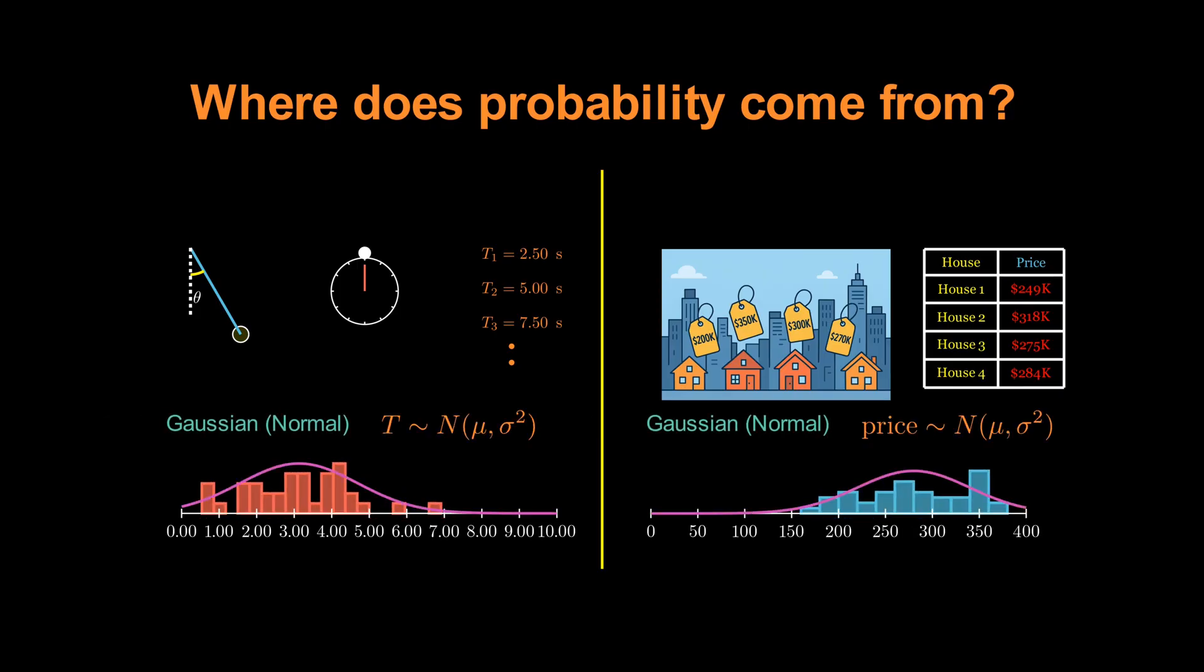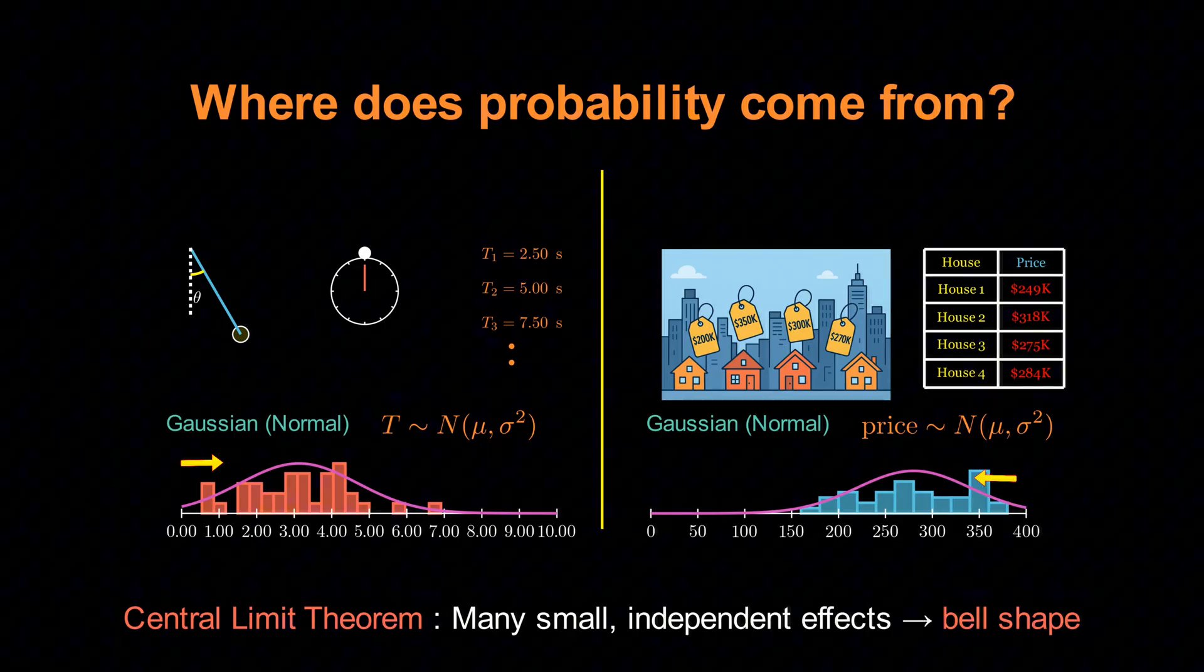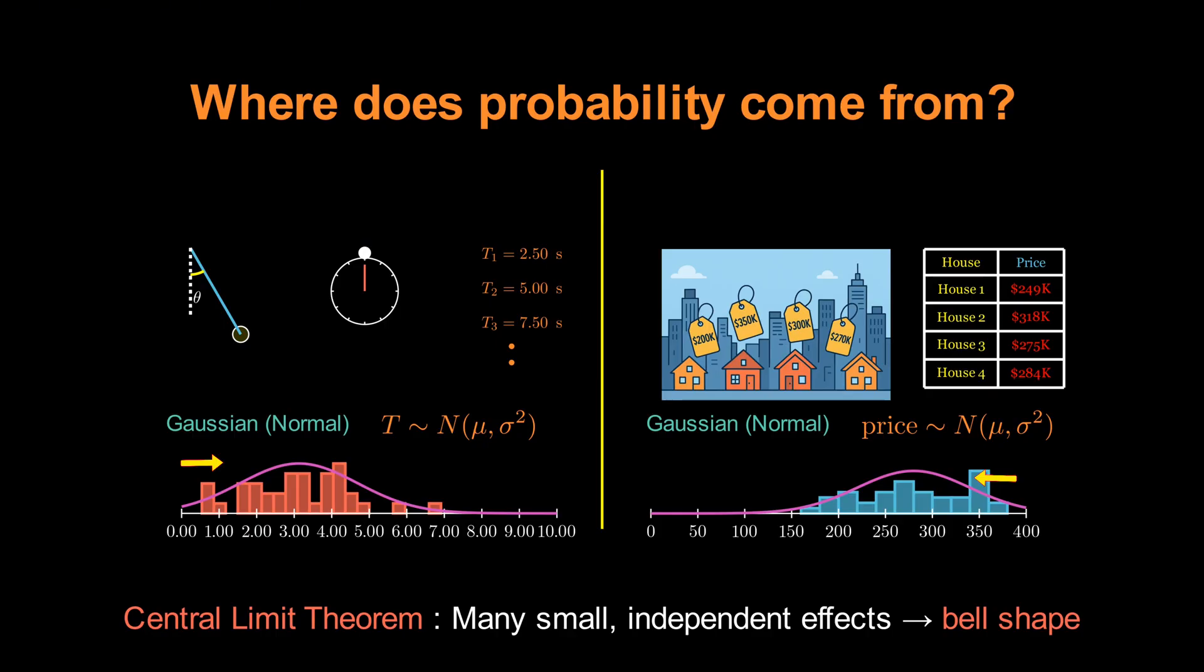If the pendulum is in equilibrium and the housing market is relatively steady, then both the period T and the house price will tend to follow a Gaussian or normal distribution. Why? That's the central limit theorem at work. Many small independent factors add together to give a bell-shaped distribution.